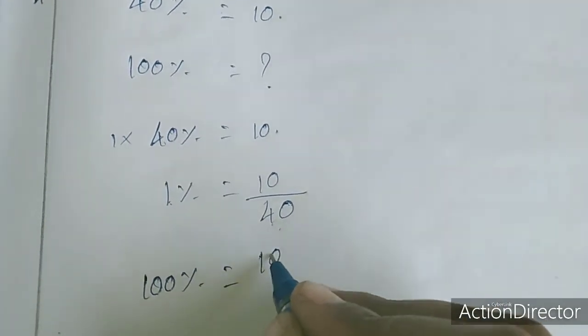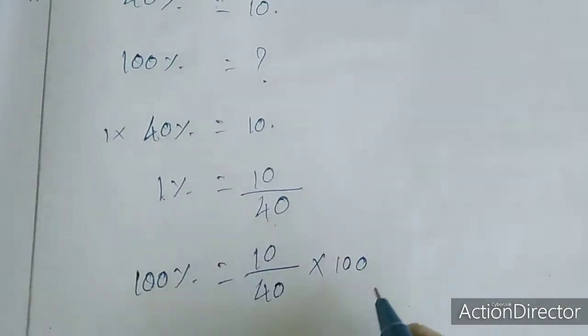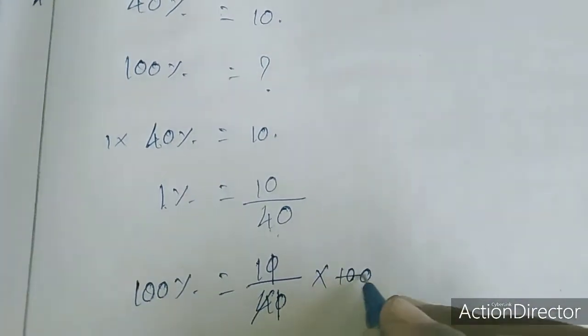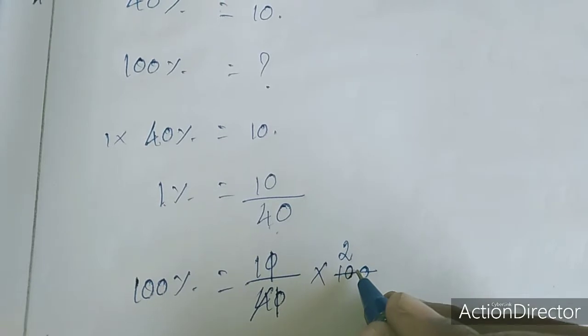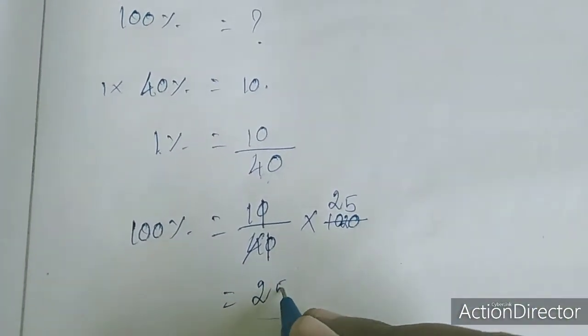So 100 multiply, divide by 40 into 100. We can do it simply. Zero zero cancel, one four is four, two fours are carrying to five. So 100% equals 25.